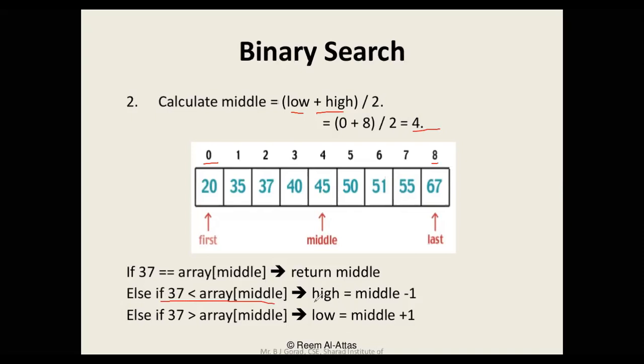Since 37 is less than 45, the value of high which was initially 8 will be middle minus 1. So middle was 4, so middle minus 1 will be 3. So the new value of high will be 3. This will be our new last or high.